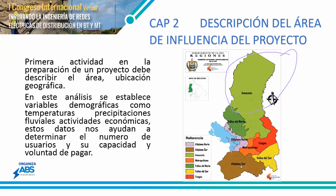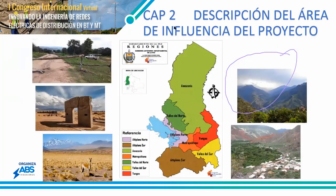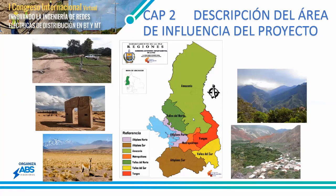Then we have the Altiplano Sur and Altiplano Norte, where the terrain is almost flat. As you can see in Chapter 2 — the description and influence area of the project — I show some photos of the peculiarity of my terrain. Here we have the Altiplano Sur and Altiplano Norte, which geographically is almost flat.